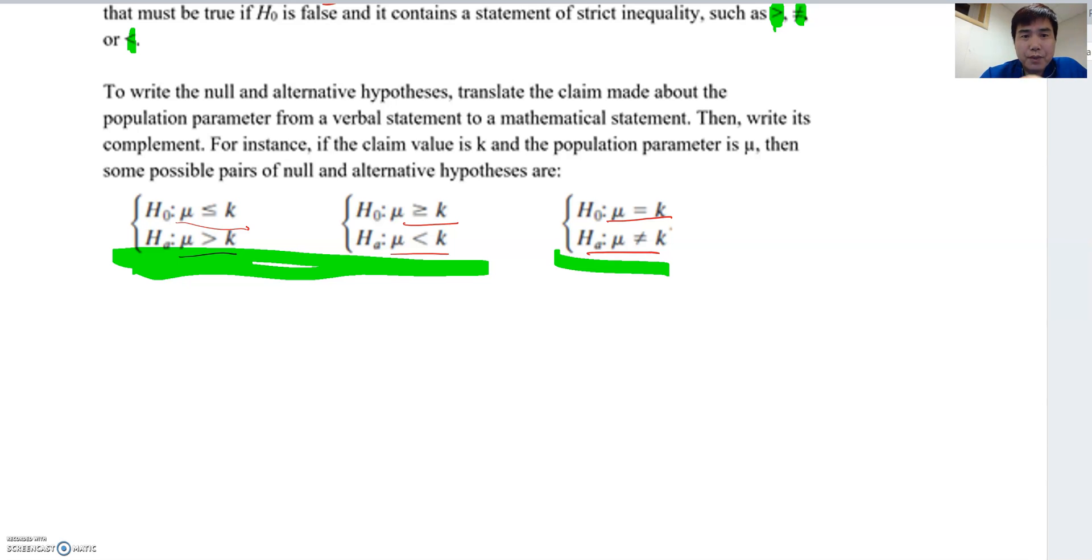When you look at those three different types of hypothesis testing, those two include inequality but this one doesn't. Therefore, those two tests we are calling one-tail test and this is two-tail test.